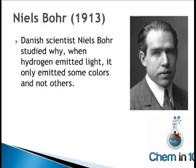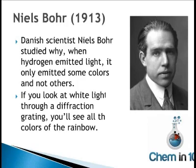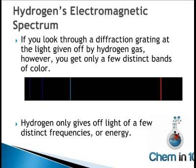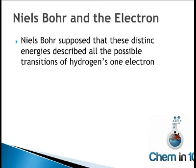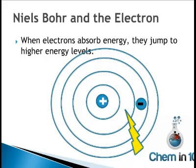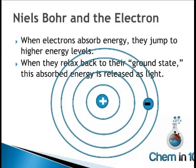Niels Bohr, a Danish scientist, further studied the electron. He studied why, when hydrogen emitted light, it only emitted some colors and not others. If you look at white light through a diffraction grating or through water droplets after a rainstorm, you'll see all the colors of the rainbow. But if you look through a diffraction grating at the light given off by hydrogen gas, you only get a few distinct bands of color. Hydrogen only gives off light of a few distinct frequencies or energy. Bohr supposed that these distinct energies described all the possible transitions of hydrogen's one electron. When electrons absorb energy, they jump to higher energy levels. When they relax back to their ground state, this absorbed energy is released as light.